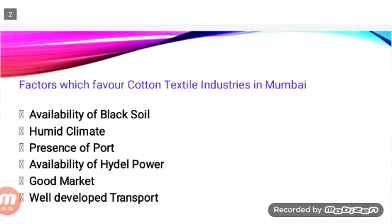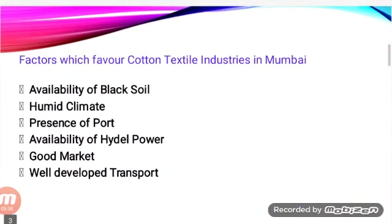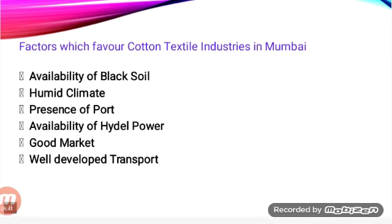The factors which favor cotton textiles in Mumbai: First, the availability of black soil, which is necessary for cotton cultivation. Second, a humid climate — the air must be humid or else the yarn may break during spinning. Third, port facilities, which help import machinery and export products to other countries.